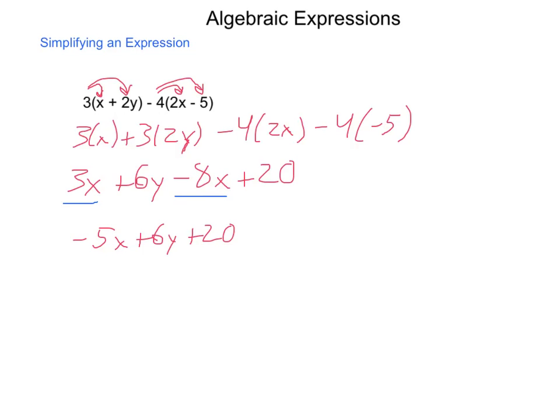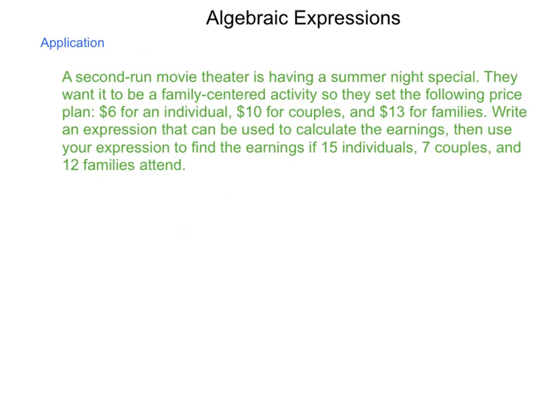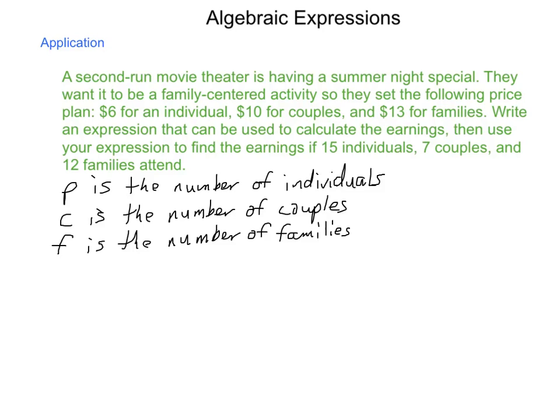There are opportunities when we can take all these skills and look at a situation, write an expression for it, and evaluate that expression for certain values. A second run movie theater is having a summer night special. They want it to be a family centered activity so they set the following price plan: $6 for an individual, $10 for couples, and $13 for families. Write an expression that can be used to calculate the earnings, then use the expression to find the earnings if 15 individuals, 7 couples, and 12 families attend. Our first order of business is to establish our variables. P is the number of individuals that attended, C is the number of couples, and F is the number of families.